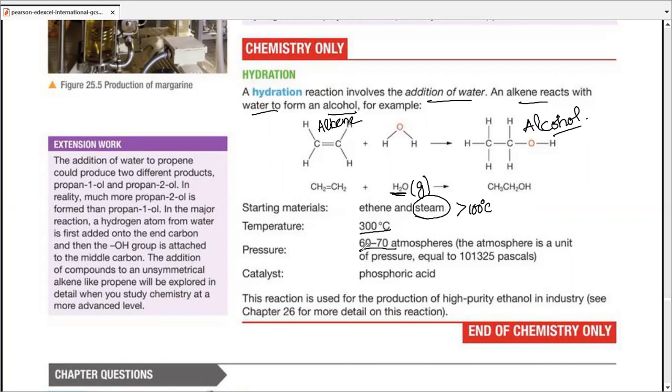Now, we use 60 to 70 atm pressure, which is equal to this many pascal. We can simply write it as 1 into 10 raised to 5 pascals. Or simply speaking, 10 raised to 5 pascals. Now, catalyst is phosphoric acid. This reaction produces high purity ethanol in industry for us. Now, as it was a steam, it's not written over here. It's a part of next chapter, but I'm going to cover it over here. It is converted into ethanol.